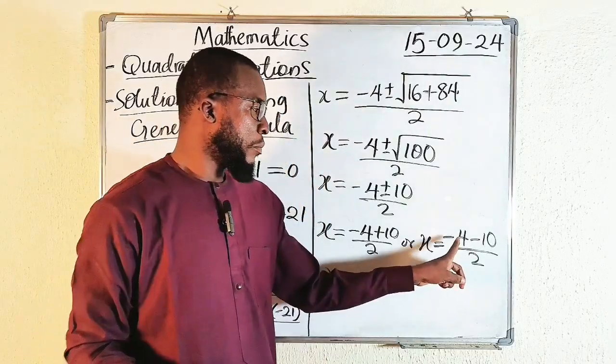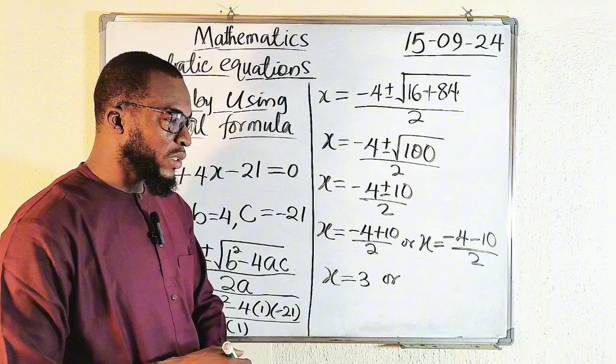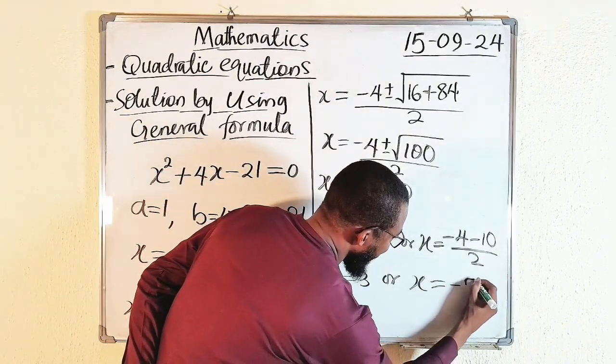Or minus 4 minus 10 will give us minus 14, and minus 14 divided by 2 will give us minus 7. And x can be minus 7.